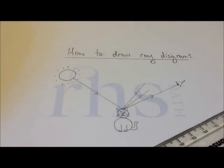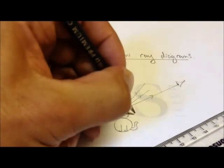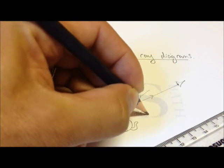So to see something, light goes from a luminous source to an object, scatters from the object, and then into an eye.